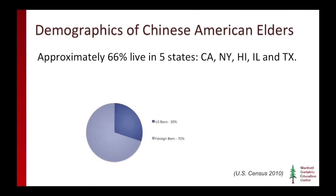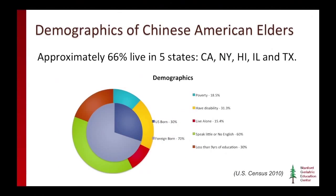Approximately 66% of all Chinese American elders live in five states: California, New York, Hawaii, Illinois, and Texas. Looking closer at the demographics, 70% of them are foreign born, and close to 19% currently live in poverty. Thirty-one percent have some form of disability, and 15% live alone. Sixty percent speak little or no English, and 30% have less than nine years of formal education.